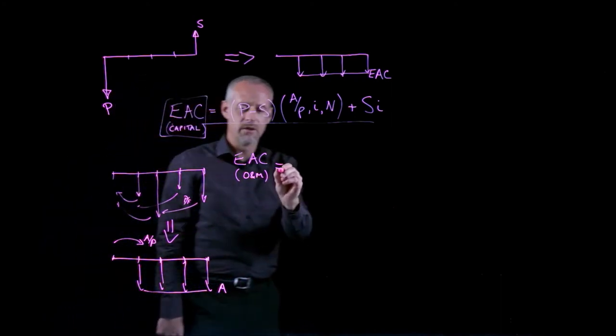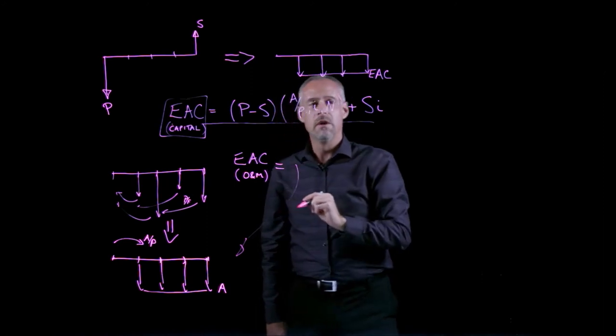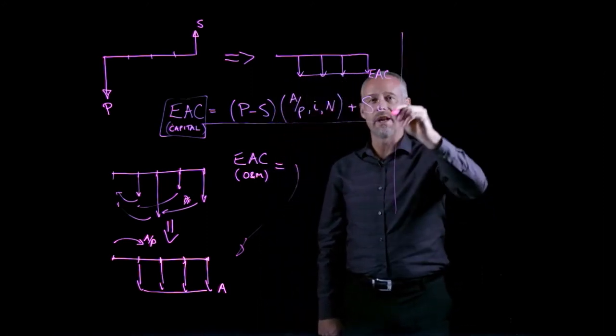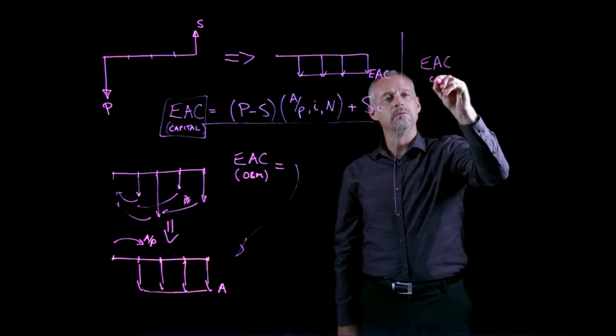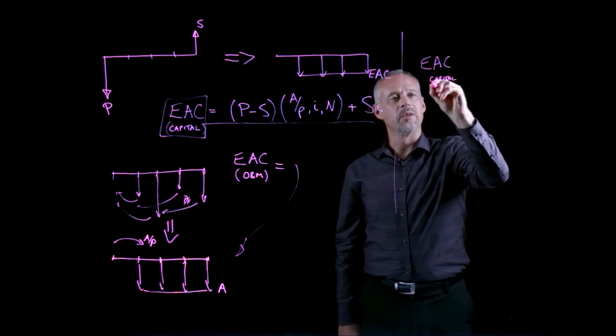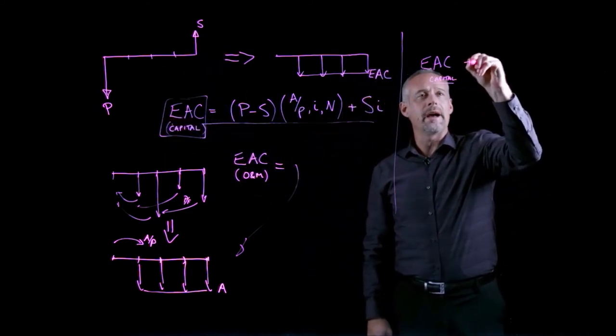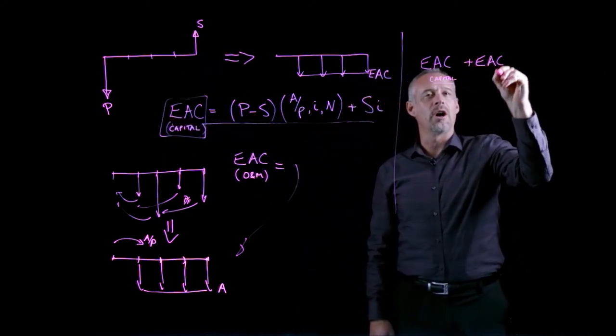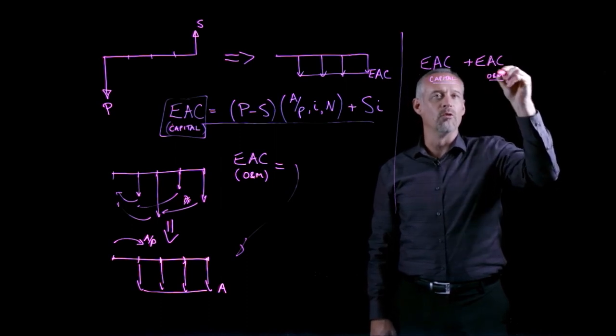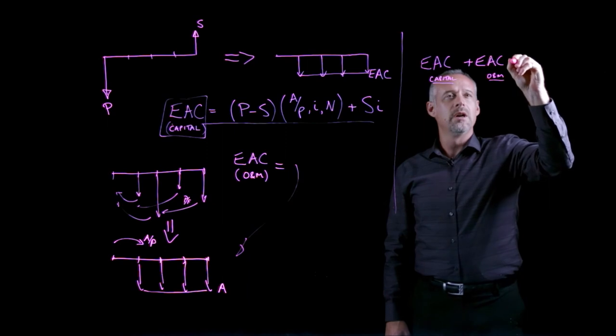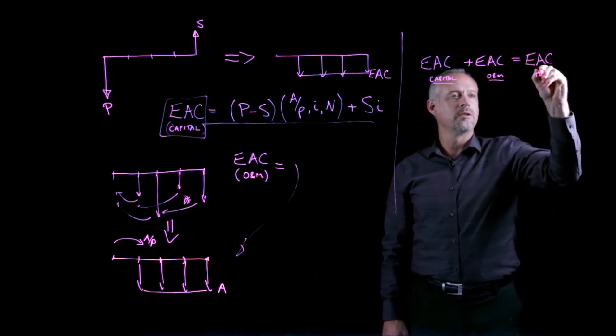Once I've done that, so once I have my equivalent annual cost for capital, so that's the EAC related to the purchase and salvage, and I have my equivalent annual cost for operating and maintenance, or repairs, or whatever it is, I sum those to get what I call the EAC total.